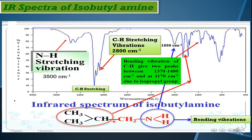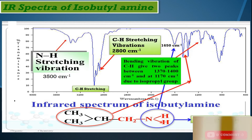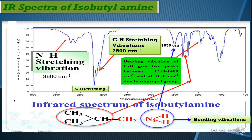Now we will discuss the IR spectra of isobutylamine. Here is the structure of isobutylamine — you can see there are four carbons and an amine group attached to one of the carbons. We can expect nitrogen-hydrogen stretching and bending vibrations. The N-H stretching vibrations appear as low-intensity bands around 3500 cm⁻¹.